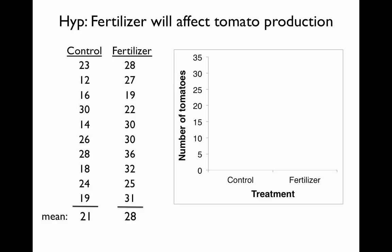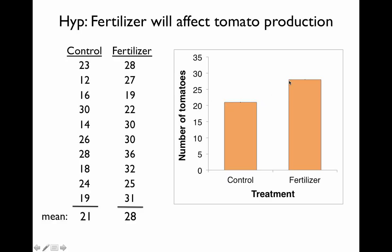The height of our bar in each case corresponds to the mean or average of each treatment. So if we add in the bars here, the height of this control bar should be 21, because that was the mean we calculated. And the height of this fertilizer bar should line up with 28 on the y-axis, because that's the average number of tomatoes we had in our fertilizer treatment.